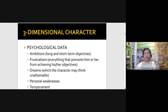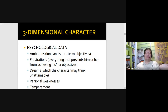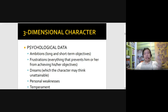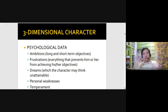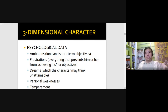It's everything that prevents your character from achieving his or her goal or solving his or her problem. And then as a writer, you might give your character dreams which they think unattainable at first, and then later on, if you'd like a happy ending, you make the character realize that particular dream and make it come true in your story. Of course, you also have personal weaknesses — you have temperament, phobias.